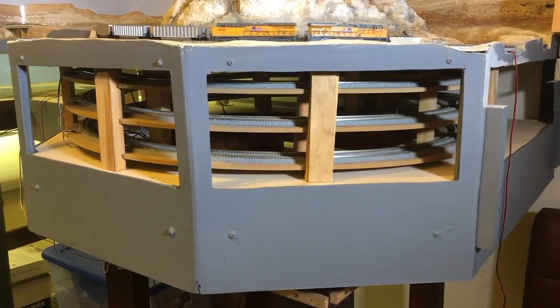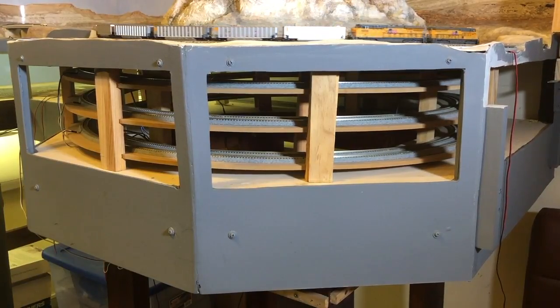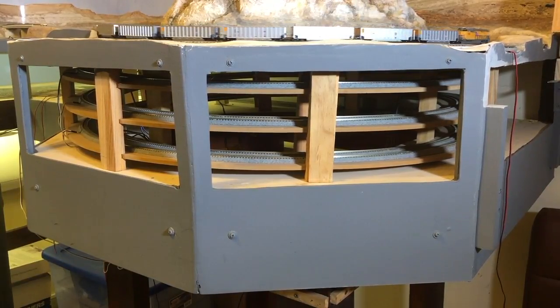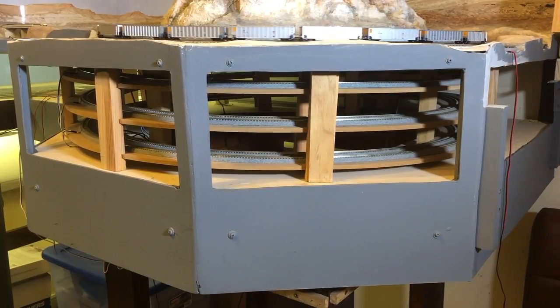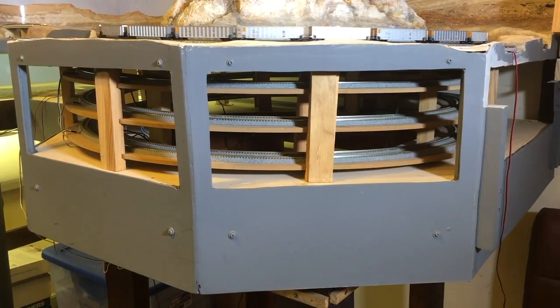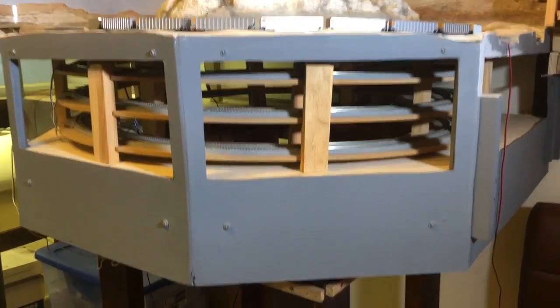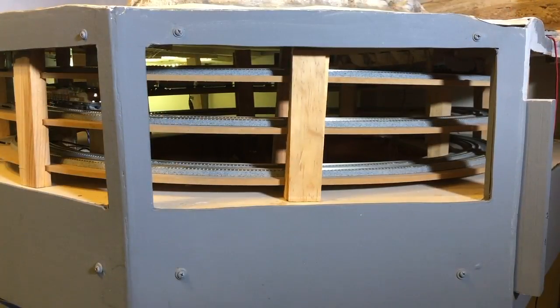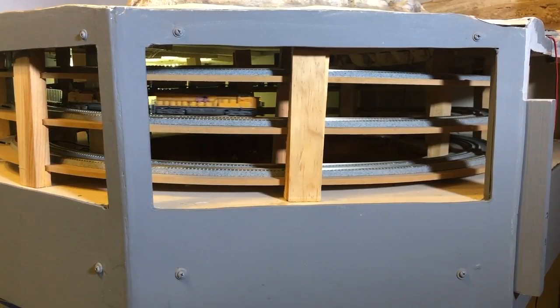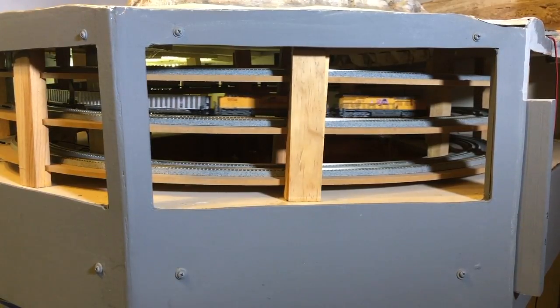Speaking of which, here's an empty eastbound coal train descending the 2% grade of the helix right now. White Mountain sits on top of the helix. It can be lifted off for access to the helix from above. I have become a really big believer in leaving helices open for easy access.